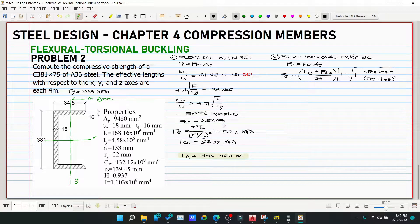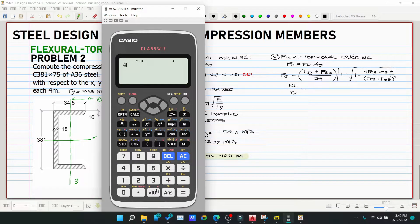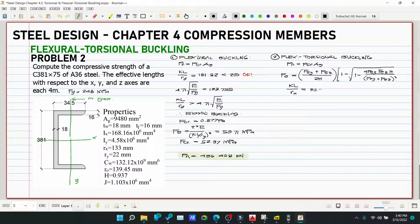What is the equation for Fcr? Same as before, but we need to check KL/r. KL/rx is equivalent to: L is 4 meters, rx is 133. So this is 30.08. This is less than 4.71√(E/Fy). We check flexural-torsional buckling on the x-axis because that's where we have axis of symmetry, where it's possible to twist. Since it's less than, our Fcr is 0.658^(Fy/Fe) × Fy.